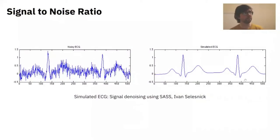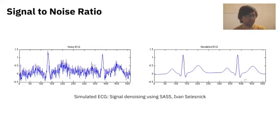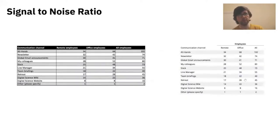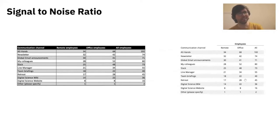One of my favorite principles is the signal-to-noise ratio. Most scientists are familiar with collecting lots of data — there's always noise, and you're trying to clean the data to hone in on the key information, the signal. The same thing applies when you're visually designing information. I chose this example of tabular data because pretty much every paper has a data table, and there's a big difference when you remove the noise and hone in on the signal in terms of how easy it is for the audience to perceive what's important.